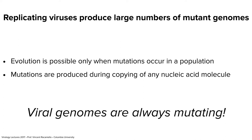When you make a lot of particles, you're making lots of mutants, because every replication cycle generates at least some mutants. Evolution is made possible only through mutation — the whole ability of every species on the planet to evolve is because mutation is the way nucleic acids replicate, and these produce new possibilities. Viral genomes are always mutating — not on any given minute or hour or day, but at every replication cycle.